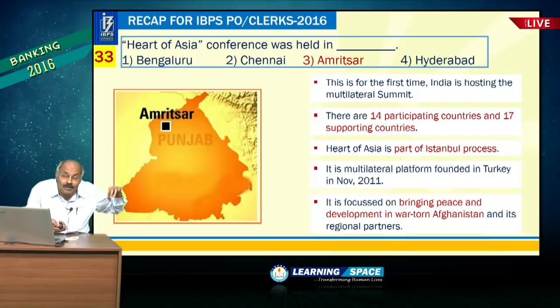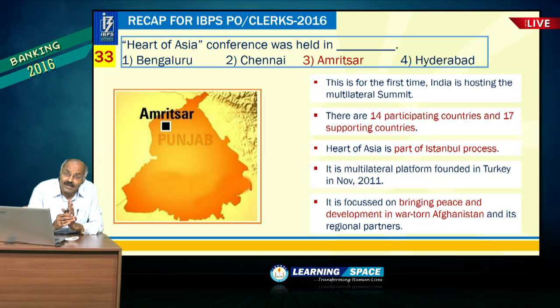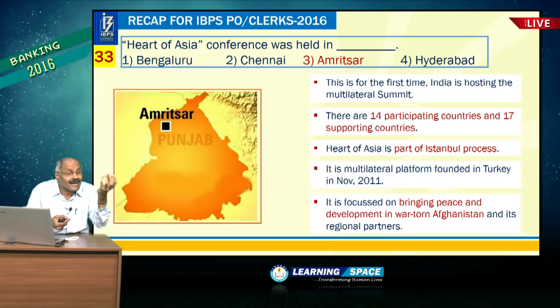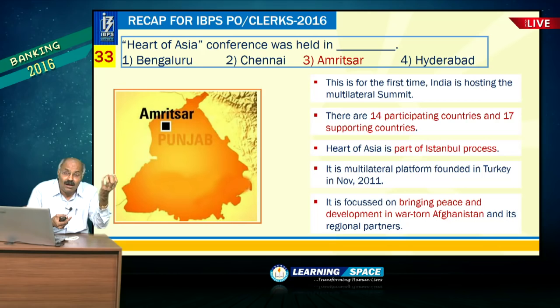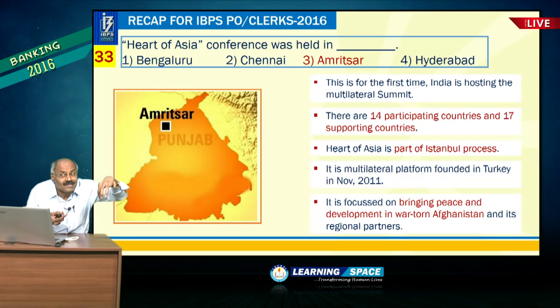Heart of Asia Conference was held in Amritsar — the first time in India. Its purpose is to ensure peace and stability in Afghanistan, which is almost at the center of Asia. It is part of the Istanbul Process, which started in the year 2011.